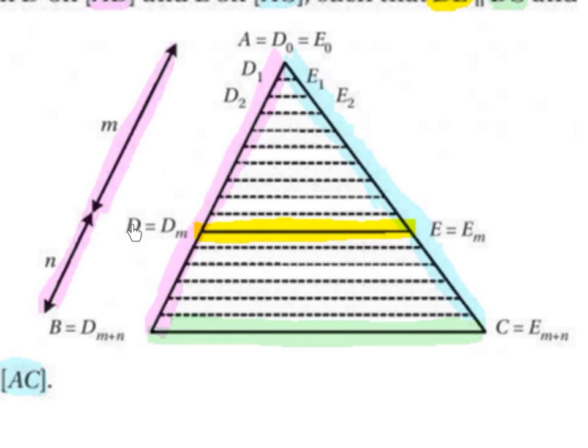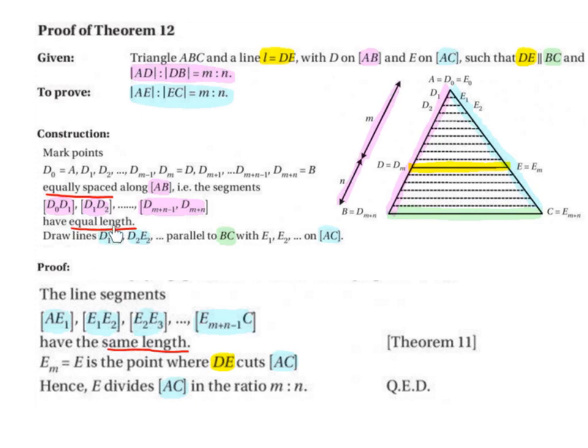Then D, which is now DM, goes to E which is now EM, and B, DM plus N, goes to C which is now EM plus N. So we drew the lines D1 E1, D2 E2 and so on parallel to BC with E1 E2 and so on on AC.